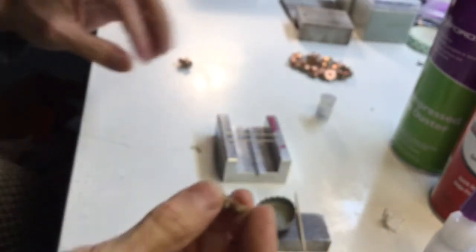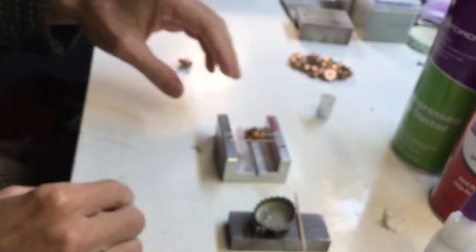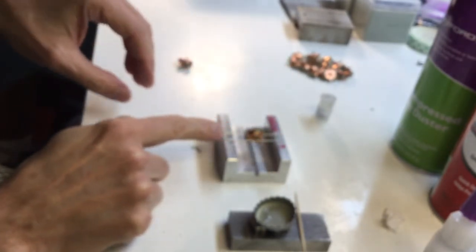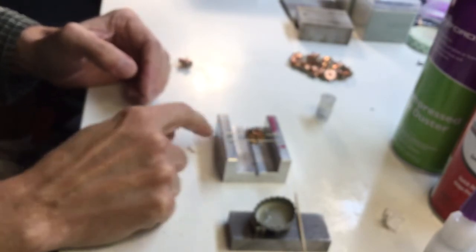So we're going to balance this armature now. Everything's demagged and cleaned up, and I put it on here and watch it swing. This one isn't off by a whole lot, but you can see it's swinging, and so the heavy side is going to swing down.